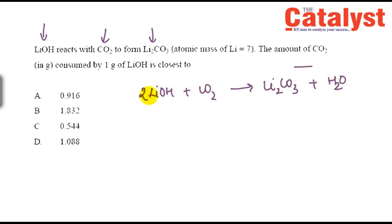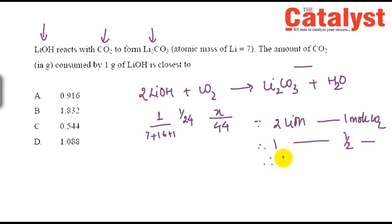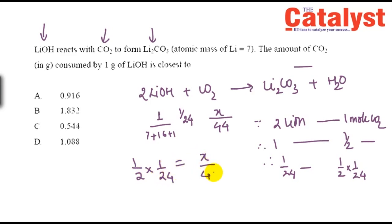The reaction 2LiOH + CO2 gives Li2CO3 + H2O needs stoichiometry. We need to find moles of LiOH and CO2. Molar mass of LiOH is 7 + 16 + 1 = 24. Using unitary method: for 2 moles of LiOH, 1 mole of CO2 is required. So for 1/24 moles of LiOH, it is (1/2) × (1/24) moles of CO2.